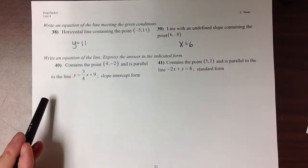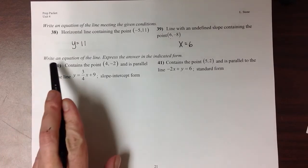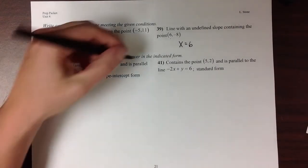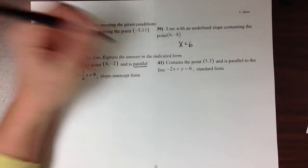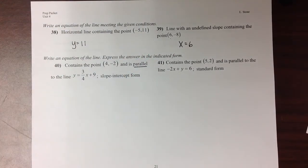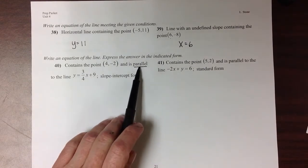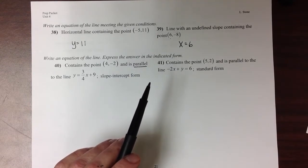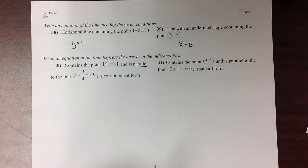These next two examples ask us to write the equation of a line again. And in the first one, we are given a point and we're told that the line is parallel to this line. And they want our final answer in slope-intercept form. So we have to go back to what we know about parallel lines. Well, parallel lines have the same slope.